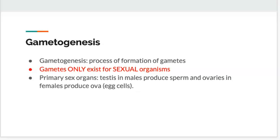If you thought that 'gameto' had to do with gametes — 100% correct. Gametes are our sex cells. Genesis has to do with creation. So creation of gametes is the process of gametogenesis. It forms gametes and it only occurs in sexual organisms — organisms that use sexual reproduction to produce offspring. The primary sex organs involved are the testes in males, producing sperm, and the ovaries in females, producing ova or egg cells.